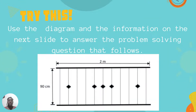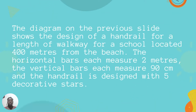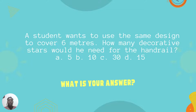Let's look at the example. Use the diagram and the information on the next slide to answer the problem solving question that follows. The diagram shows the design of a handrail for a length of walkway for a school located 400 meters from the beach. The horizontal bars each measure 2 meters, the vertical bars each measure 90 centimeters, and the handrail is designed with five decorative stars. A student wants to use the same design to cover six meters. How many decorative stars would he need for the handrail? Is it five, 10, 30, or 15?